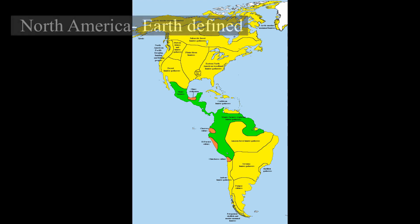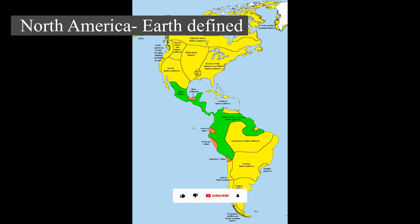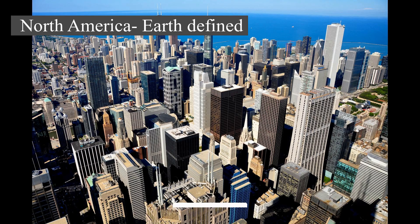North America is a continent in the Northern Hemisphere and almost entirely within the Western Hemisphere. It is bordered to the north by the Arctic Ocean, to the east by the Atlantic Ocean, to the southeast by South America and the Caribbean Sea, and to the west and south by the Pacific Ocean. Because it is on the North American tectonic plate, Greenland is included as a part of North America geographically.